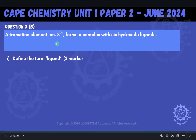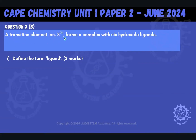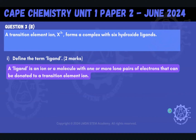It says a transition element ion X3+ forms a complex with six hydroxide ligands. Define the term ligand. A ligand is an ion or a molecule with one or more lone pairs of electrons that can be donated to a transition element ion.